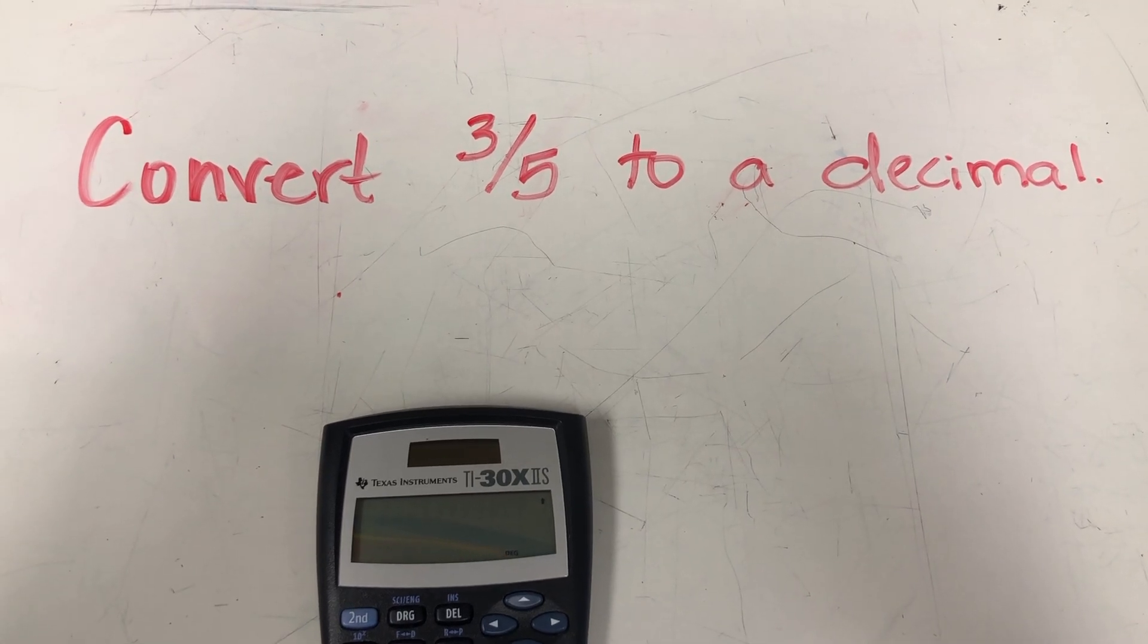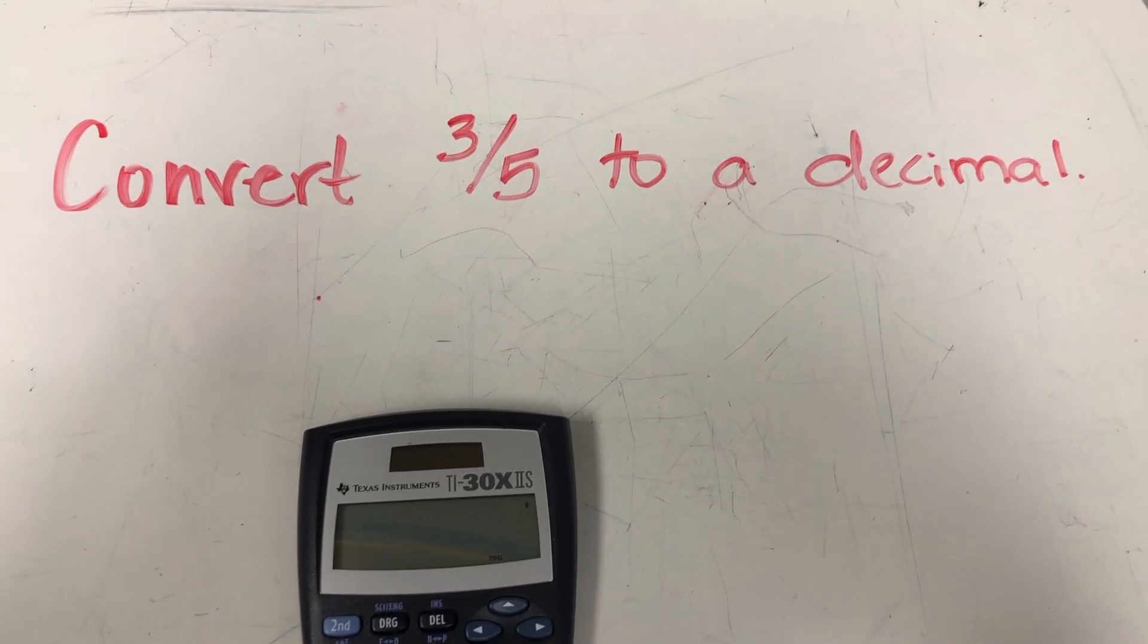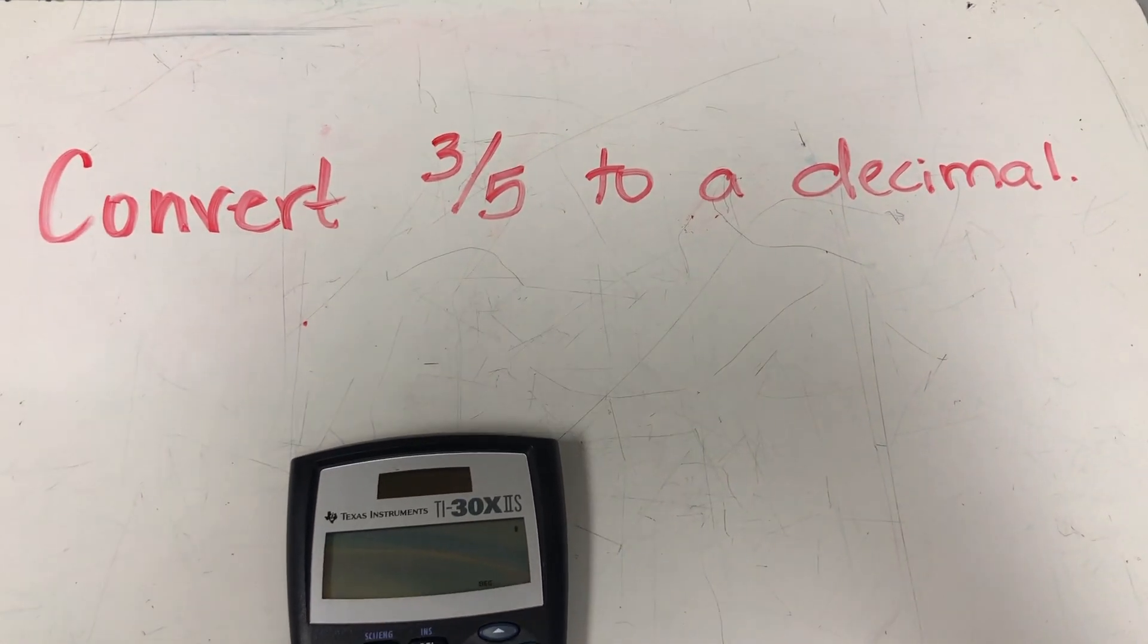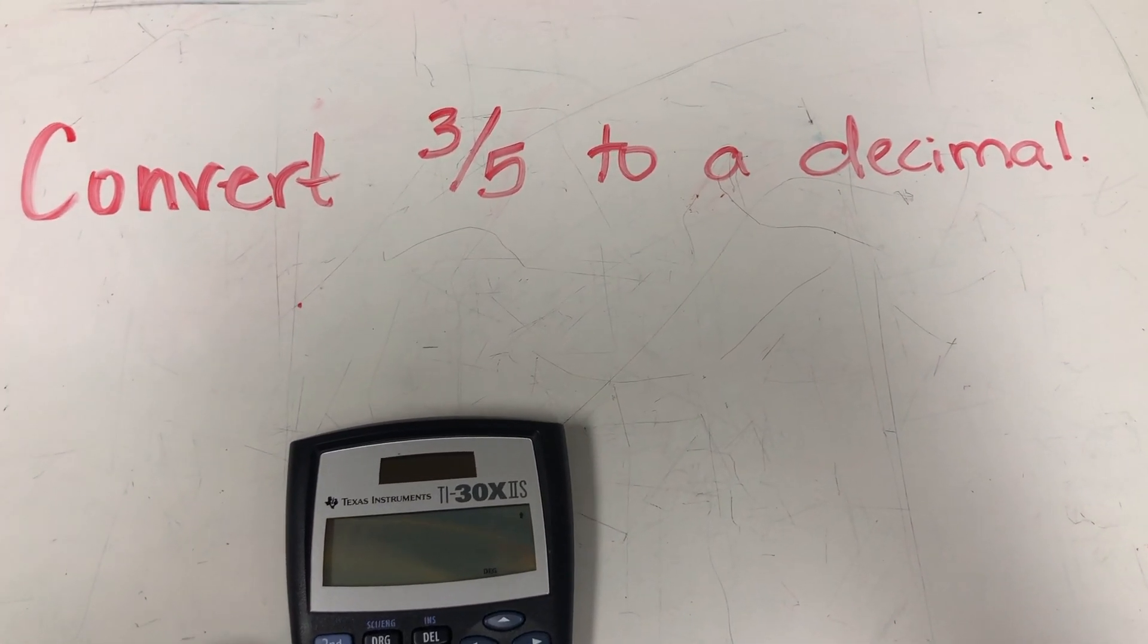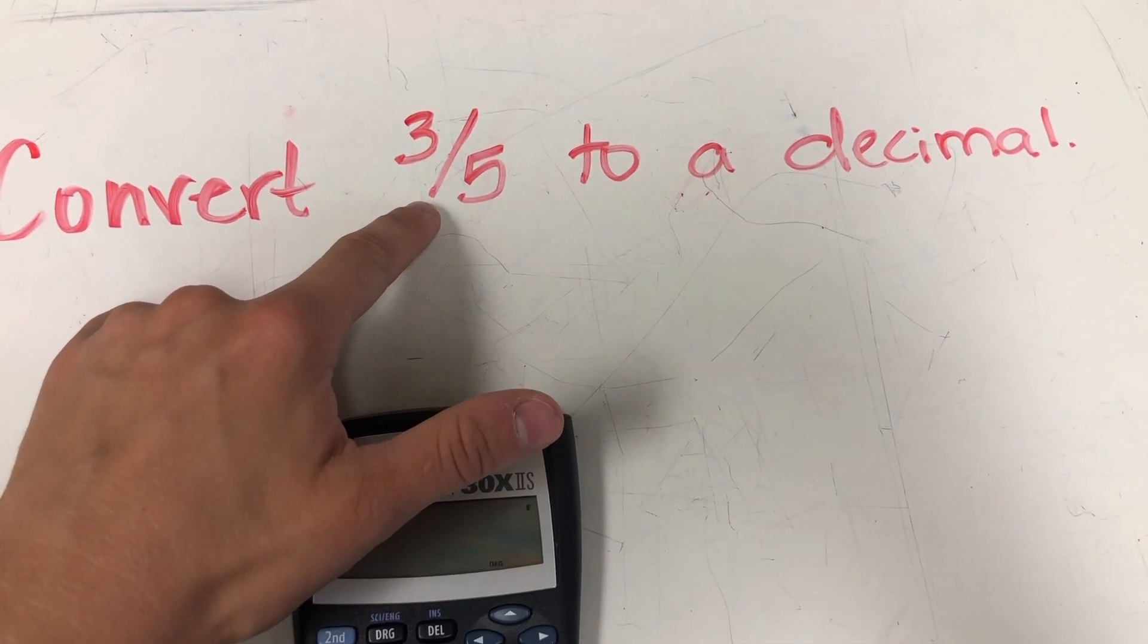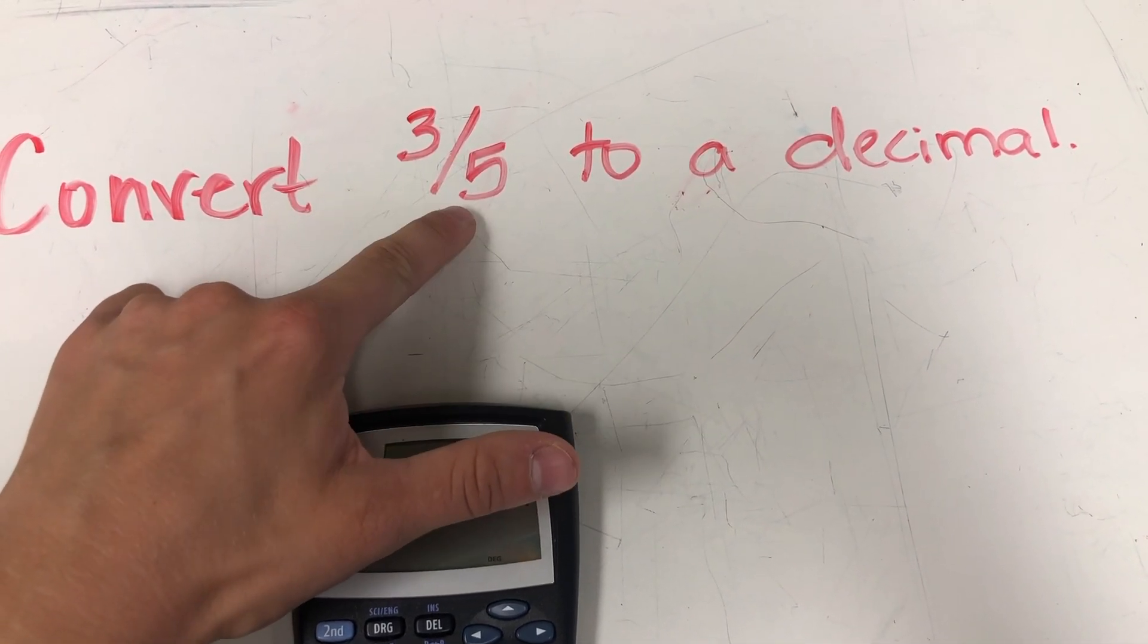All right, this type of problem here, converting between fractions and decimals, is one of my favorite uses for a calculator. This one says convert three-fifths to a decimal. You might already know this as a decimal, but if you didn't, the fastest way to do this is to remember that fractions are really taking the numerator divided by the denominator.